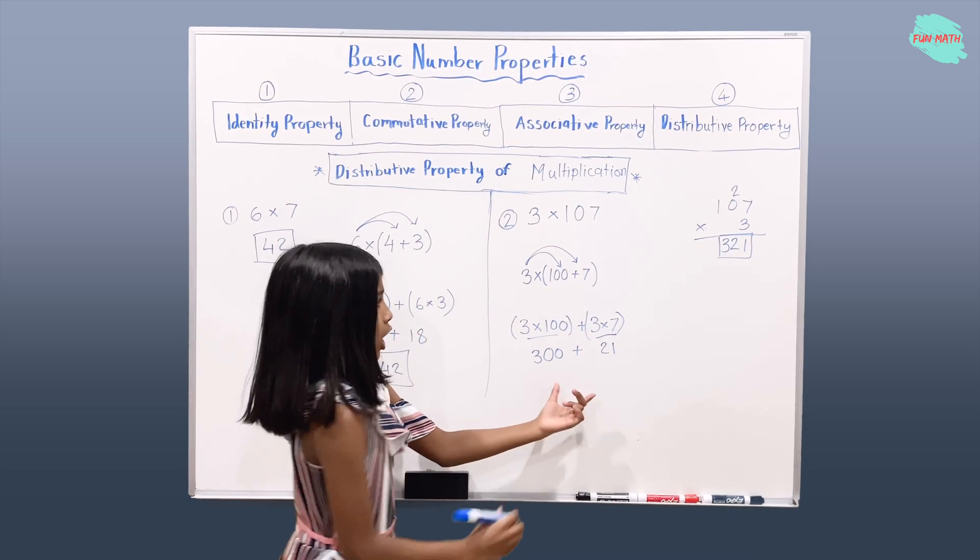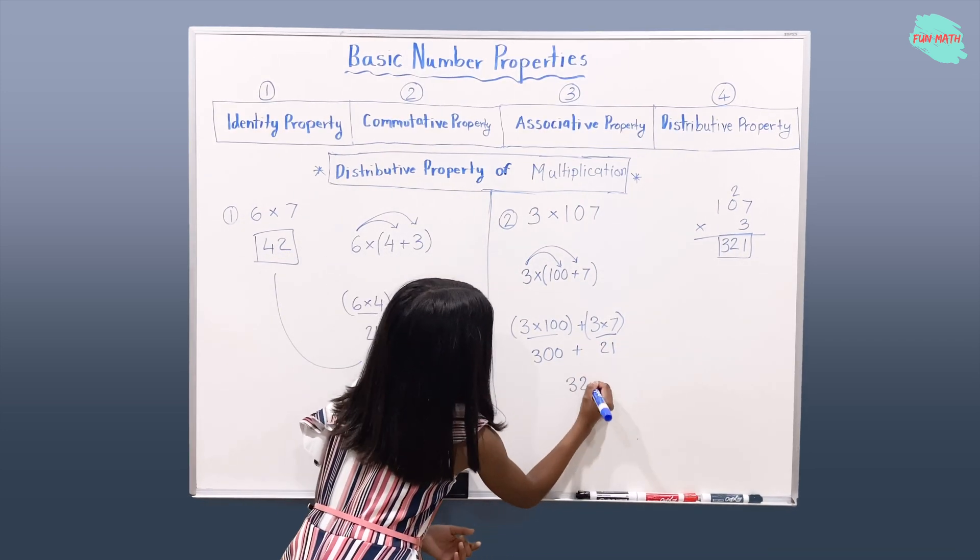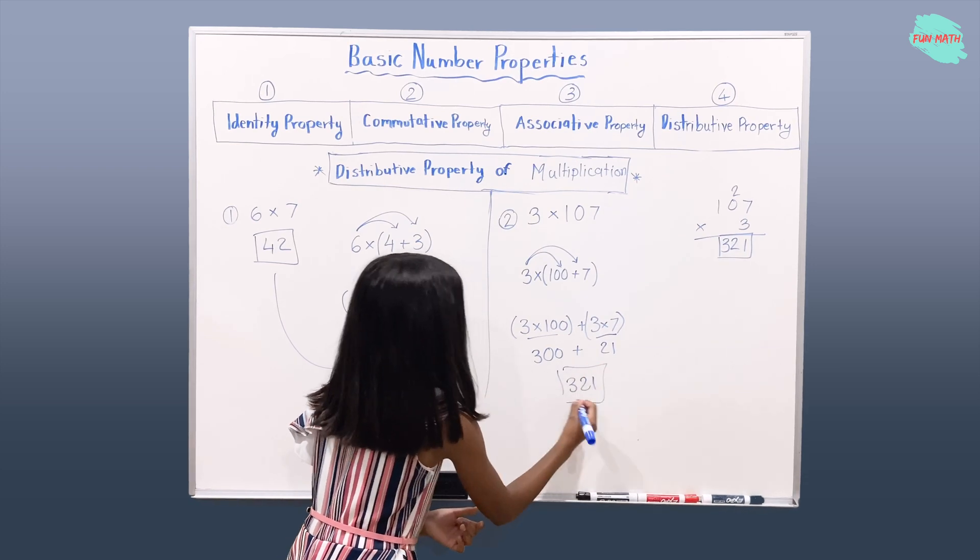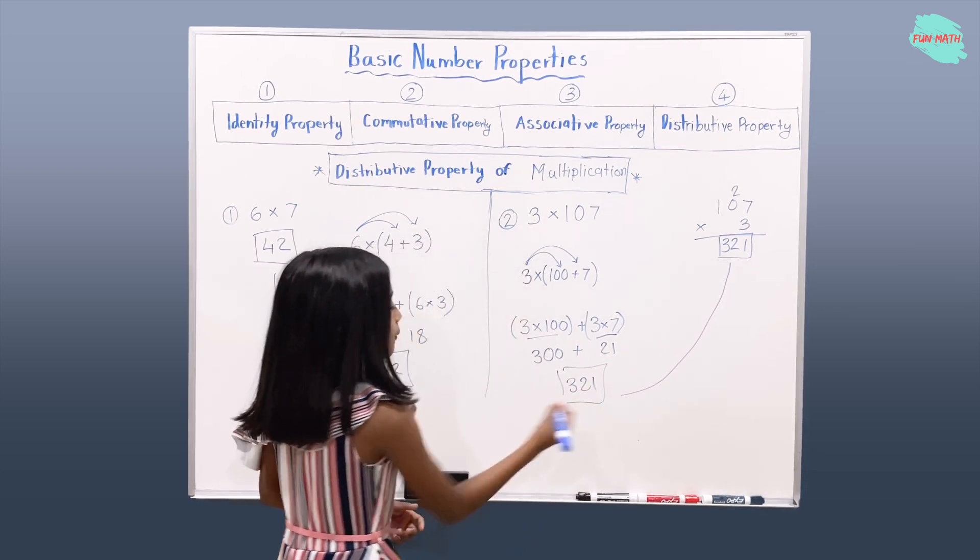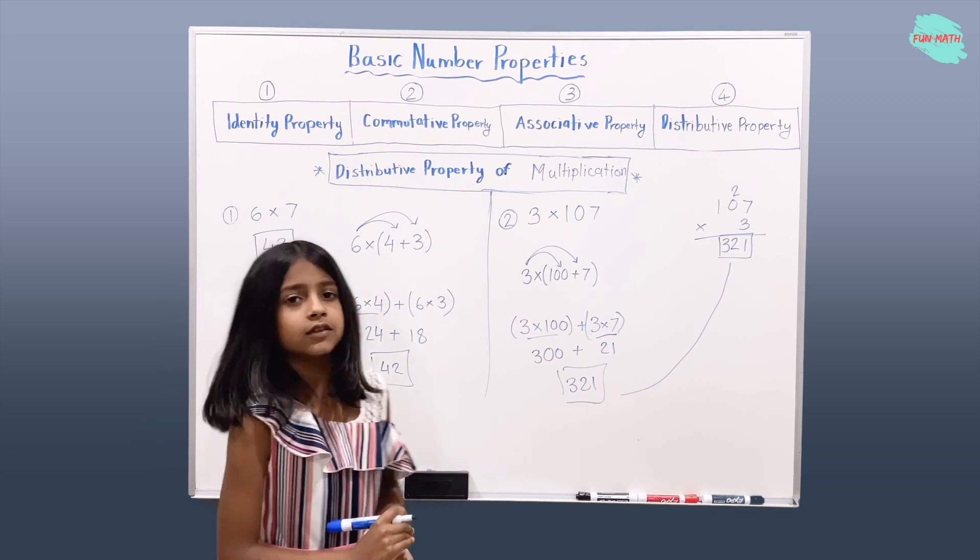When you multiply these, you will get 321. You got the same product as here. So, you got the right answer.